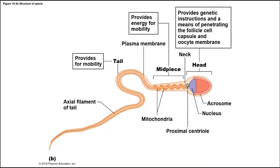A sperm has three parts: the head, the midpiece, and the tail. The tail provides mobility for movement. The midpiece contains mitochondria — the powerhouse of the cell — providing energy. The head contains the nucleus.